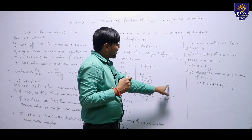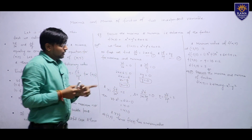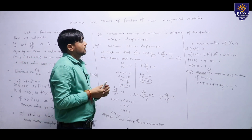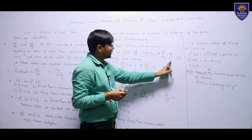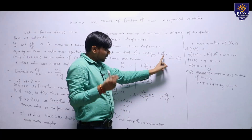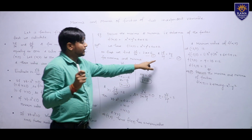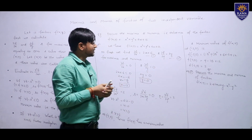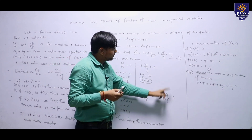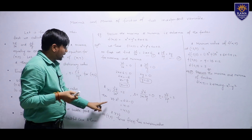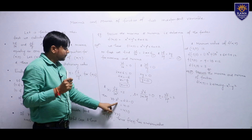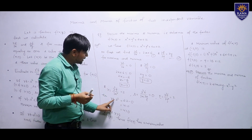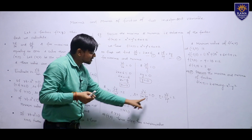T = ∂²f/∂y². From equation 2, partially differentiating ∂f/∂y = 2y again with respect to y gives T = 2. Now, RT − S² = 2 × 2 − 0 = 4 − 0 = 4, which is greater than 0. Here R = 2, T = 2, and S = 0.